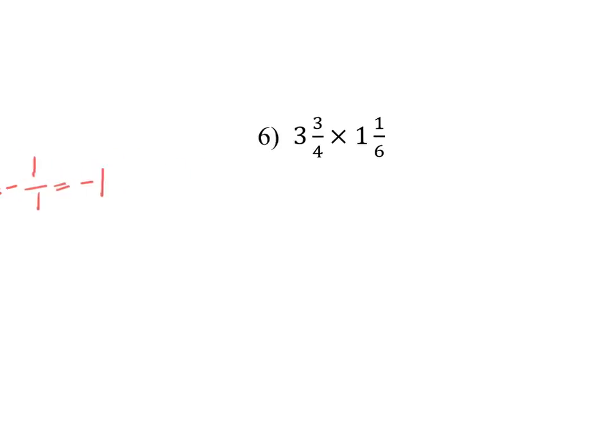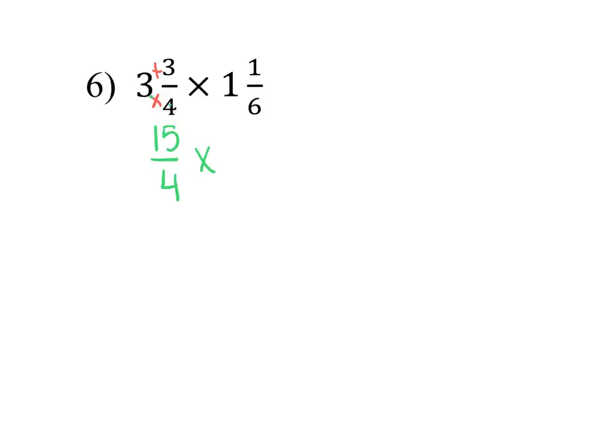Number six: 3 and 3/4 times 1 and 1/6. We're going to Texas it. So multiply and add. 4 times 3 is 12. Plus 3 is 15. 6 times 1 is 6. Plus 1 is 7.